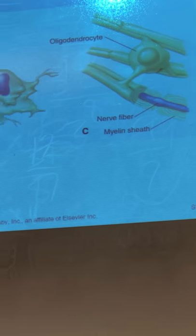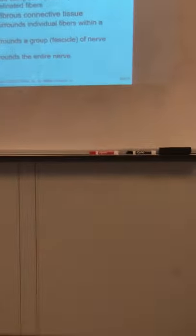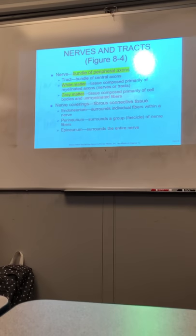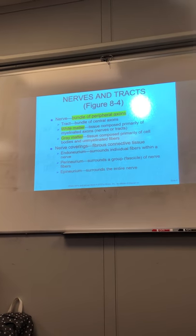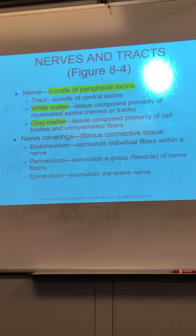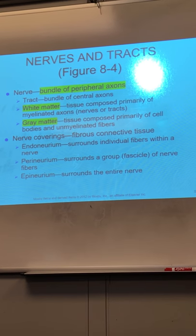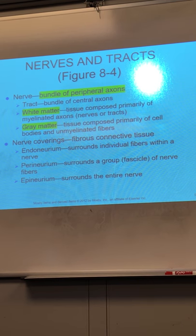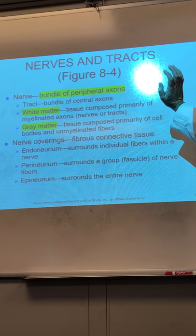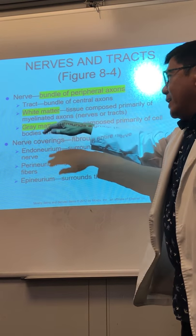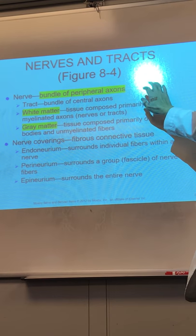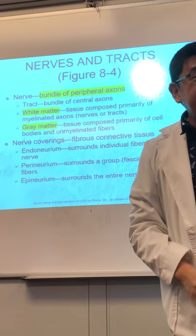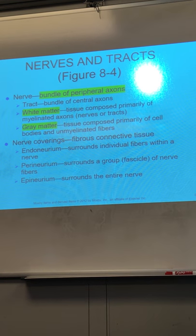This is the central nervous system neuron. Now, when you say 'nerve,' it's a very ambiguous term. It could mean a nerve tract, it could mean the white matter, the gray matter, a bundle of nerves, or a single nerve fiber itself. So the white matter is tissue composed primarily of myelinated axons.